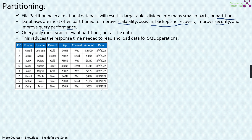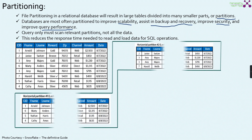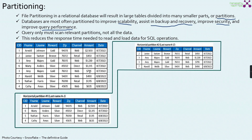To explain it better, consider this table with close to eight records having multiple fields like CID, fname, lastname, reward, zip, channel, amount, and date. There are multiple ways to partition this. One way is horizontal partitioning, which we call sharding. Here, the table is partitioned into two partitions — horizontal partition one and horizontal partition two — where four records are stored in each partition.